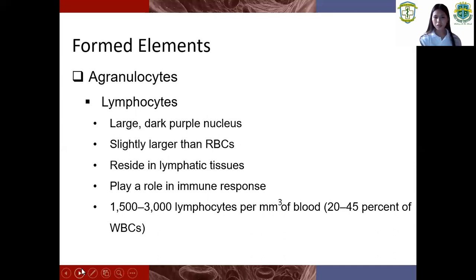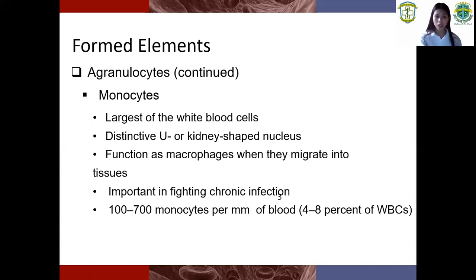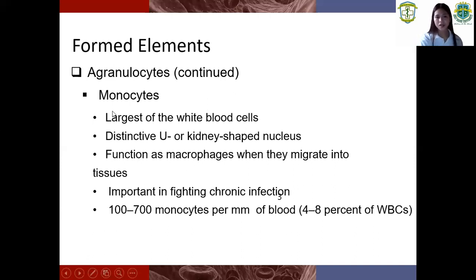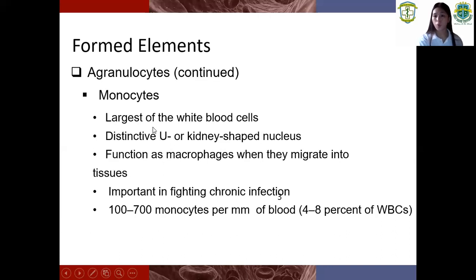So the second type of agranulocytes is monocytes. Monocytes are the largest of the white blood cells, with a distinctive U or kidney-shaped nucleus. Function as macrophages when they migrate into tissues. Important in fighting chronic infection. Normal range is 100 to 700 monocytes. Lymphocytes have a large dark purple nucleus, while monocytes are the largest of the white blood cells.